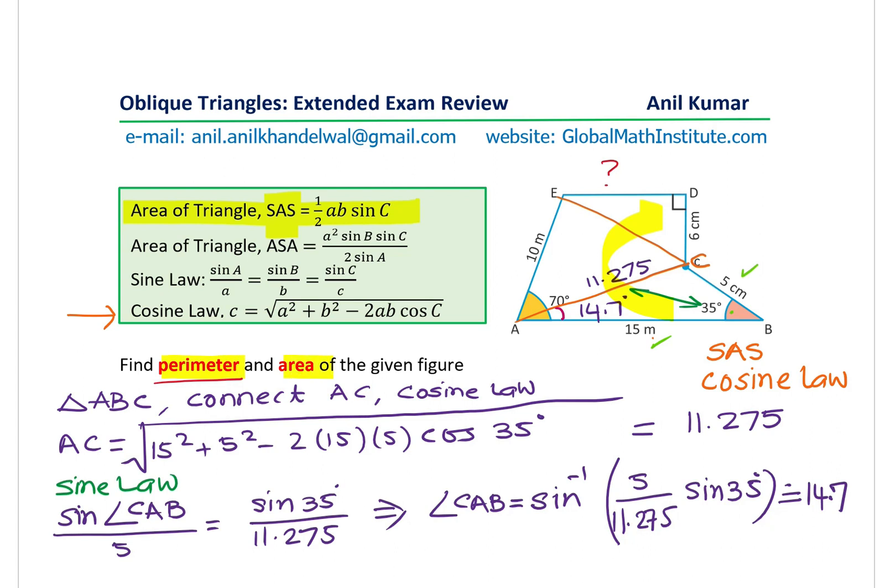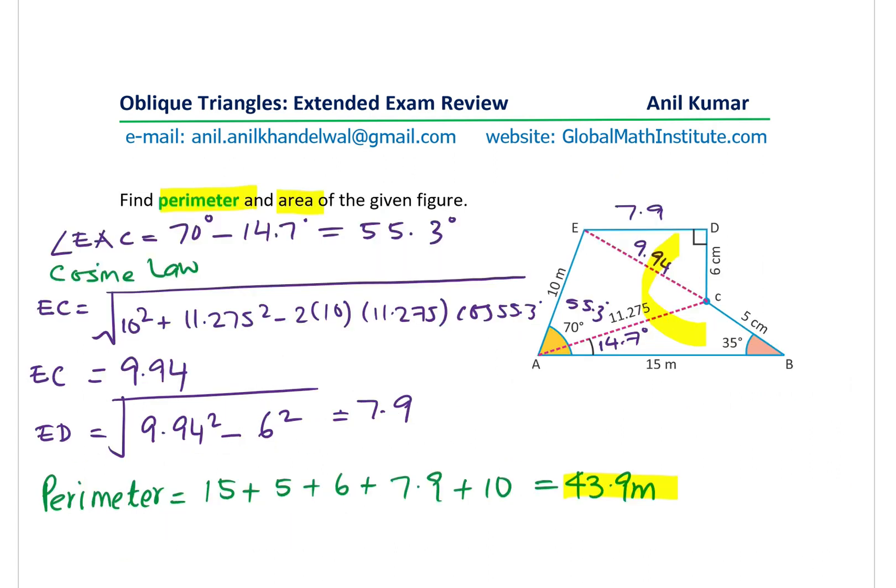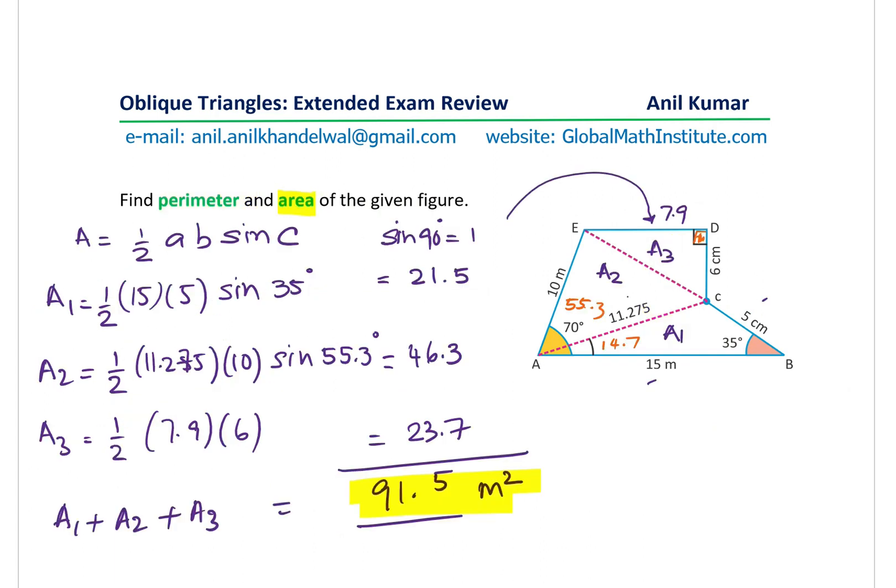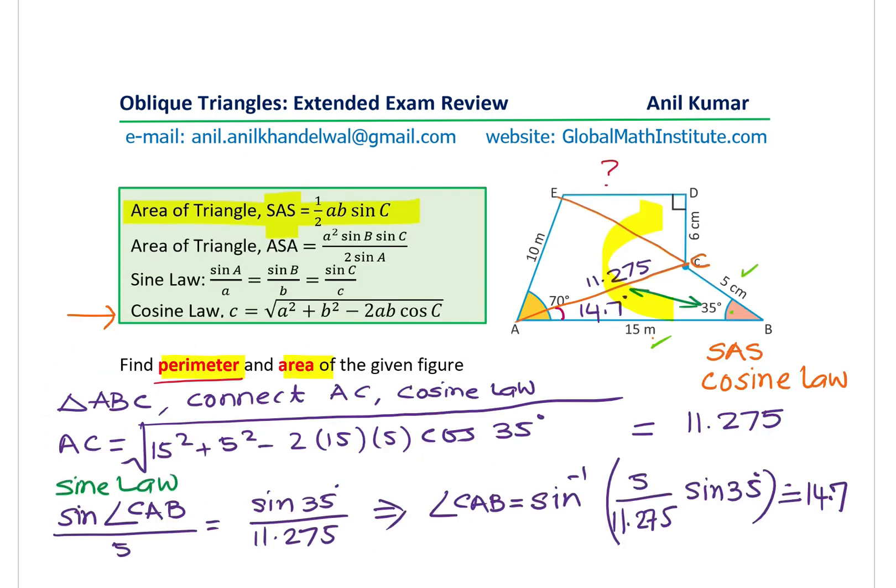Perfect. So we got the value of the perimeter as 43.9 meters and area as 91.5 meters square. You may do the calculations, just check them out, but I hope you have understood the method.